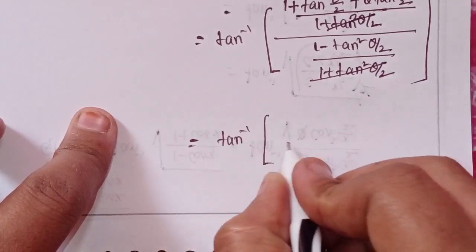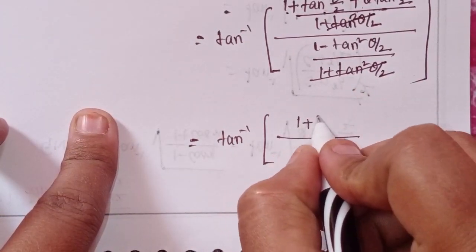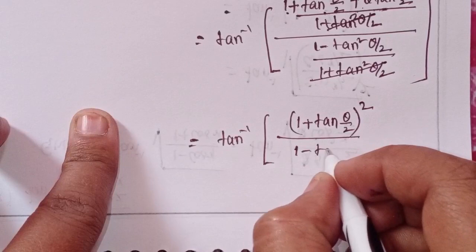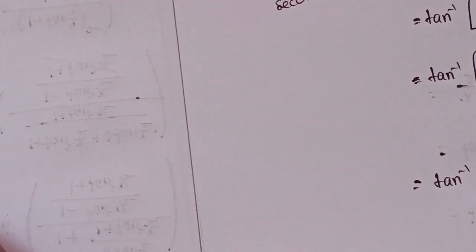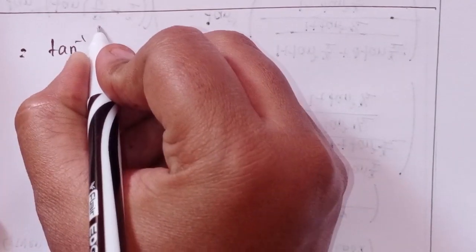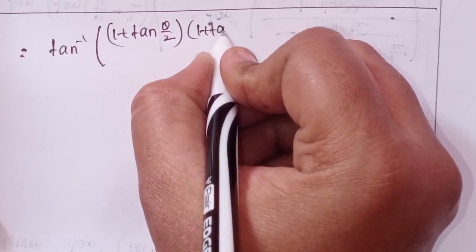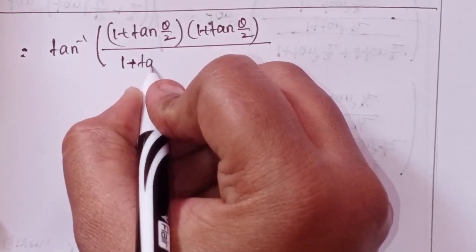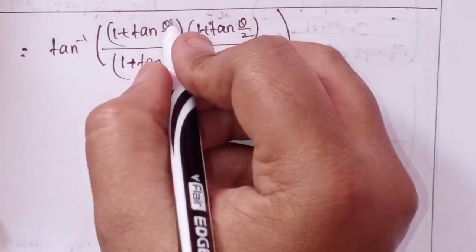Tan inverse of (1 plus tan(θ/2)) divided by (1 minus tan(θ/2)). In the denominator: 1 plus tan(θ/2) times 1 minus tan(θ/2) — these two cancel. Next, tan inverse of 1 plus tan(θ/2) over 1 minus tan(θ/2). Writing 1 as tan(π/4), and using the tan(a+b) formula: tan(π/4) plus tan(θ/2) over 1 minus tan(π/4) times tan(θ/2). These cancel.